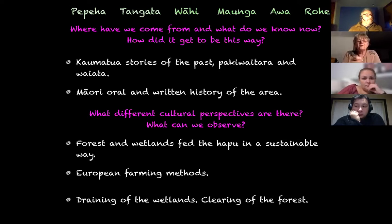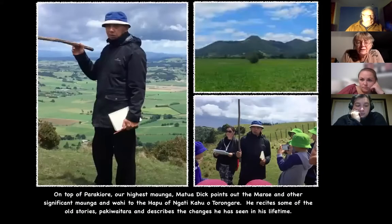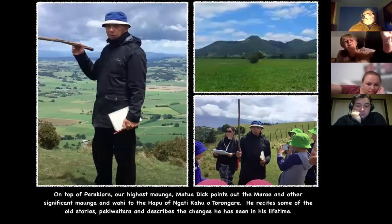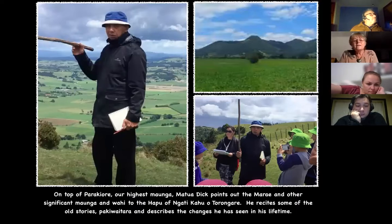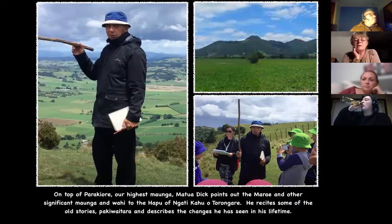The whānau said we needed the kaumātua to find out where we've come from — our oral and written history, the pakiwaitara and waiata. Around us we have forest, wetlands, and farmland with European farming methods. A lot of the wetland is gone, the forest has been cleared. This is Matua Dick — our kura kaumātua. Behind him on that maunga is Parakiori, which we can see out the window of the school.